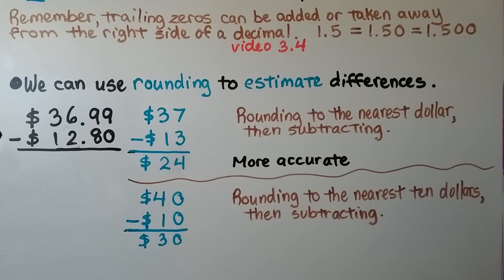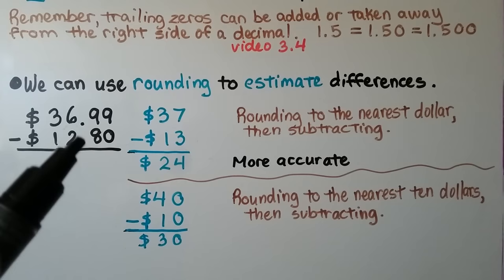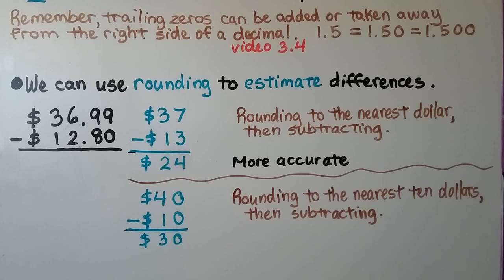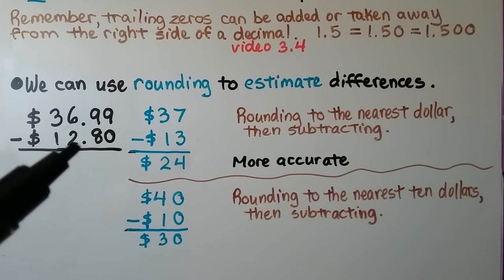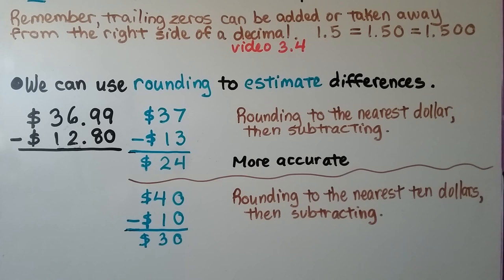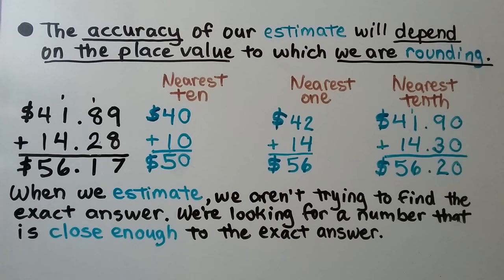We can use rounding to estimate differences. Here we're doing subtraction: $36.99 minus $12.80. This 9 tells the 6 to go up to a 7, so it rounds to $37 when we round to the nearest dollar. This 8 tells the 2 to go up to a 3, so it rounds to $13. And $37 minus $13 is $24. If we're rounding to the nearest $10, the 6 tells the 3 to go up to 4, and the 2 tells the 1 to stay the same. We have $40 minus $10, that's $30. The $24 answer is more accurate because we rounded to a lesser place value.